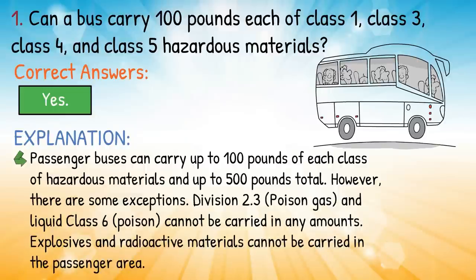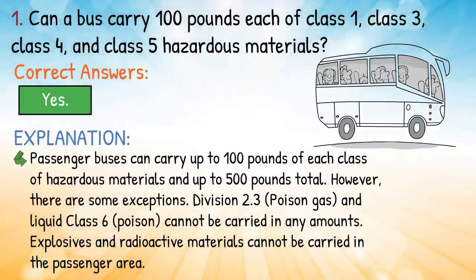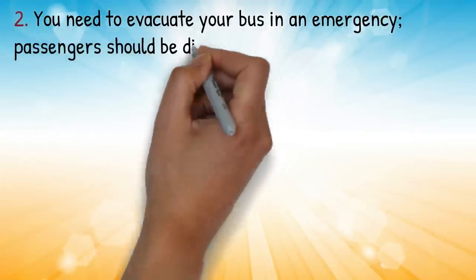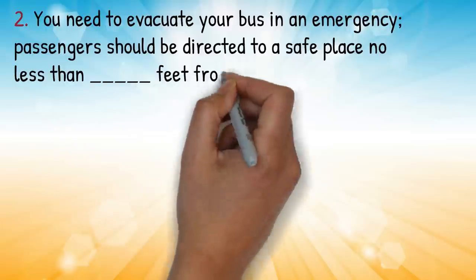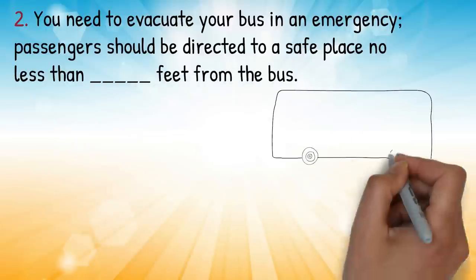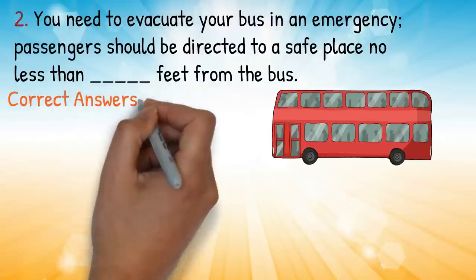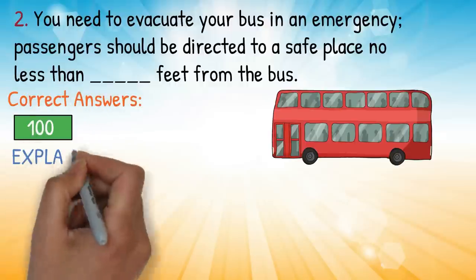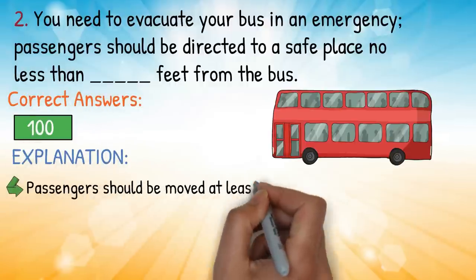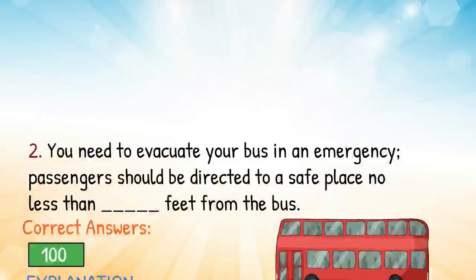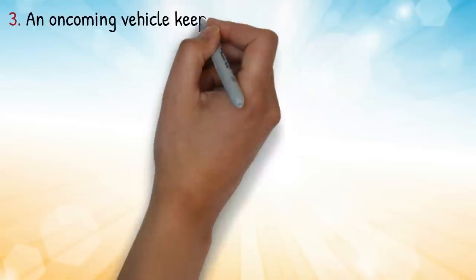However, there are some exceptions: division 2.3 poison gas and liquid class 6 poison cannot be carried in any amounts; explosives and radioactive materials cannot be carried in the passenger area. Question two: you need to evacuate your bus in an emergency — passengers should be directed to a safe place no less than blank feet away from the bus. Correct answer: 100 feet.